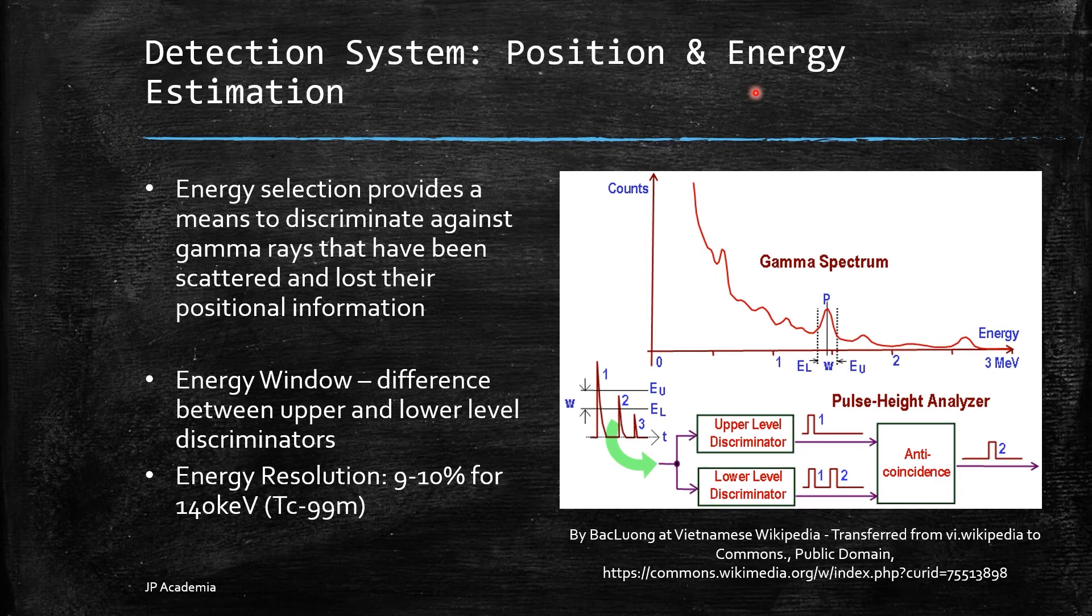Pulse height analyzer principle is described by this picture. We have three pulses. Pulse 1, pulse 2, and pulse 3 are detected at different times of T. Two discriminators emit a counting signal if their set voltage level is reached by a pulse. Pulse 2 triggers the lower level E sub L, but not the upper level E sub U.